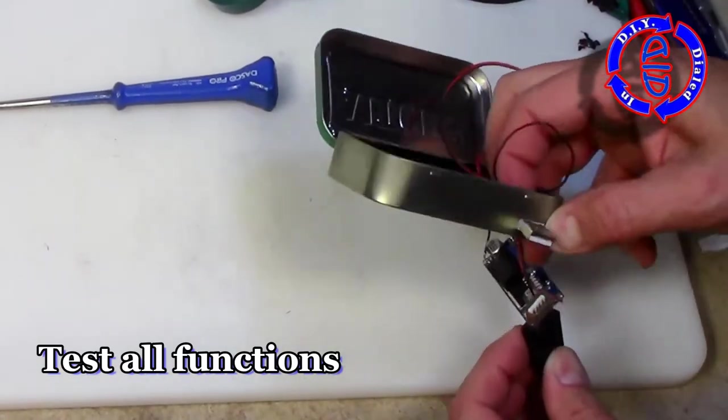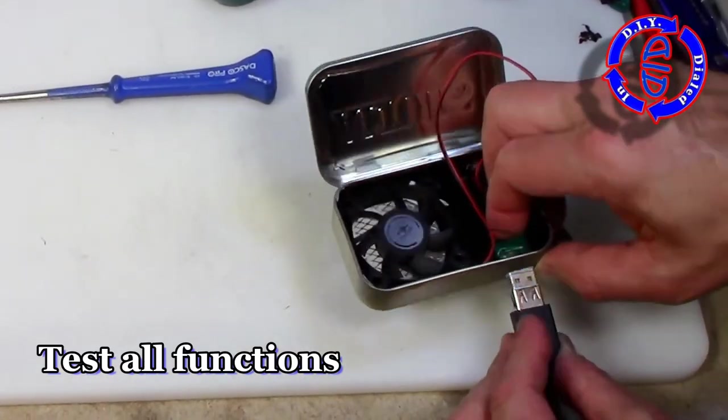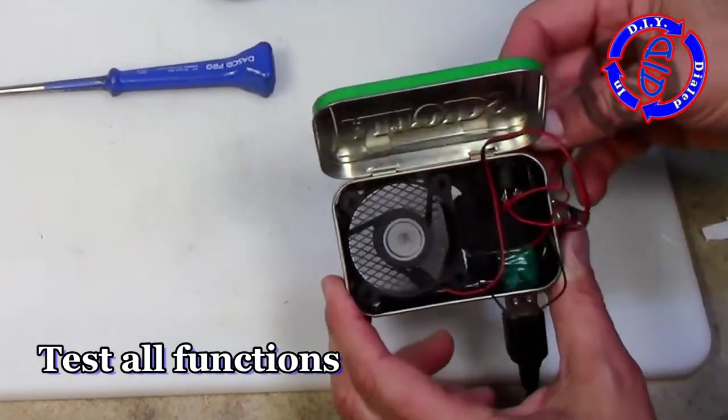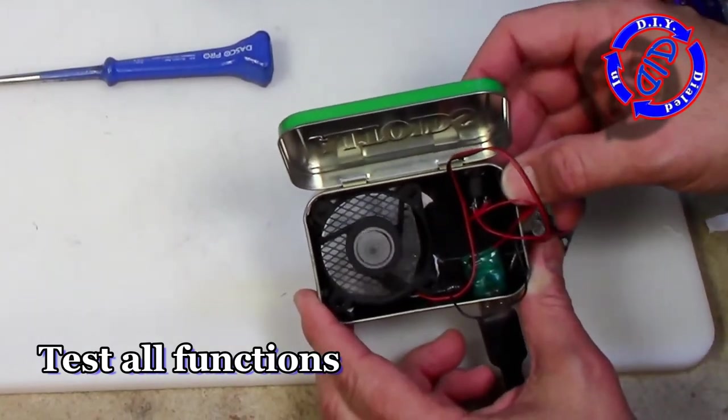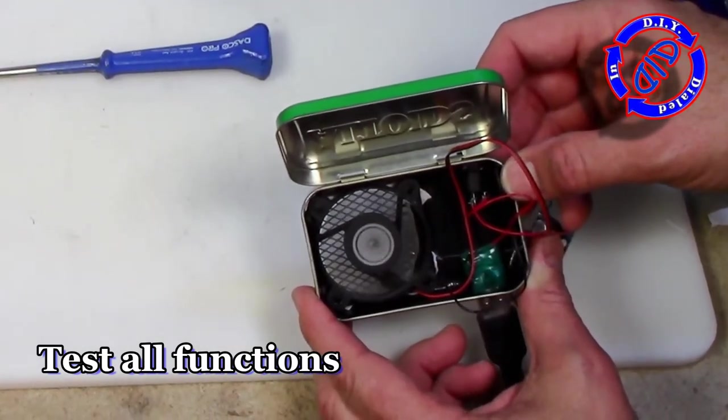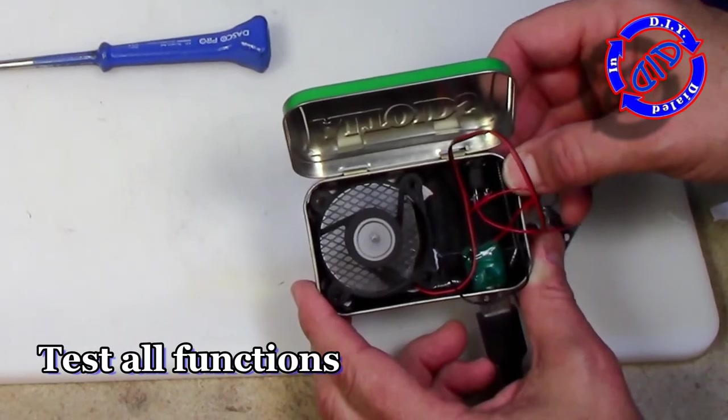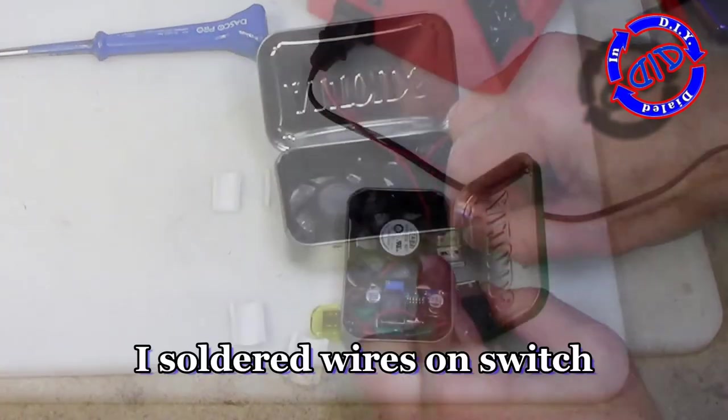To test out my fan, I'm going to take this extension USB cable and plug it into the side. The other end is connected to a wall wart and the on-off switch works, fan works. It's a success. I like the way it works. Now we just need to clean it up a little bit.